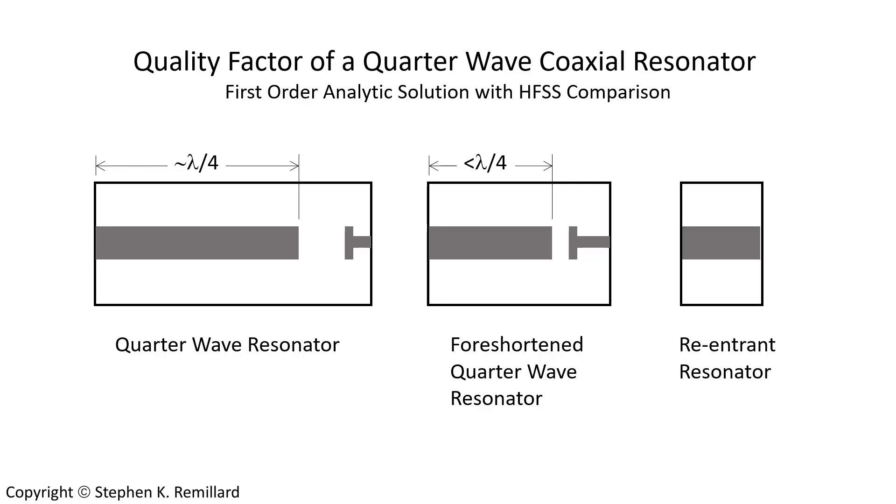All resonators are at least foreshortened, but depending on the degree of foreshortening, the Q expressions for the quarter wave resonator will be applicable, if not precisely, at least somewhat closely.